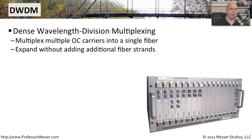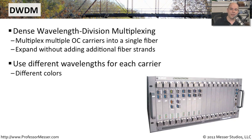You can have very high speeds going across this, and as you want to increase the amount of data, you simply add new wavelengths into this single strand of fiber — you don't have to keep running new fiber to increase throughput. We use a different wavelength for each carrier, which, effectively talking about light, is a different color going across those connections. The more colors you can put over that fiber, the more data you can send.